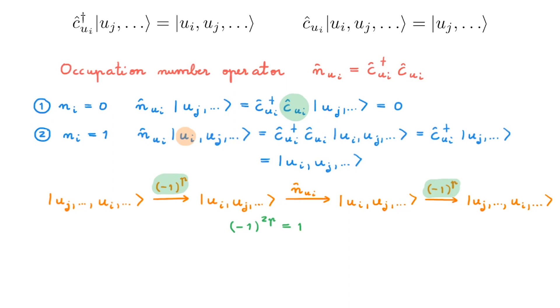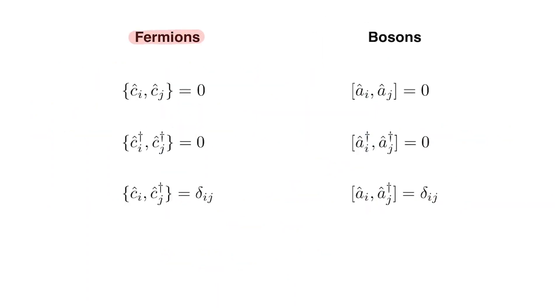With this result we can construct the operator associated with the total number of particles as a sum of occupation number operators, or explicitly in terms of creation and annihilation operators. To finish, the fermionic creation and annihilation operators obey anti-commutation relations, which are a direct consequence of the antisymmetric nature of fermionic states. By contrast, bosonic operators obey commutation relations, a consequence of the symmetric nature of bosonic states. The anti-commutation algebra captures all subtleties of antisymmetry and forms the basis of describing fermions in second quantization. Don't forget to check the companion video on bosons, and if you liked the video please subscribe!